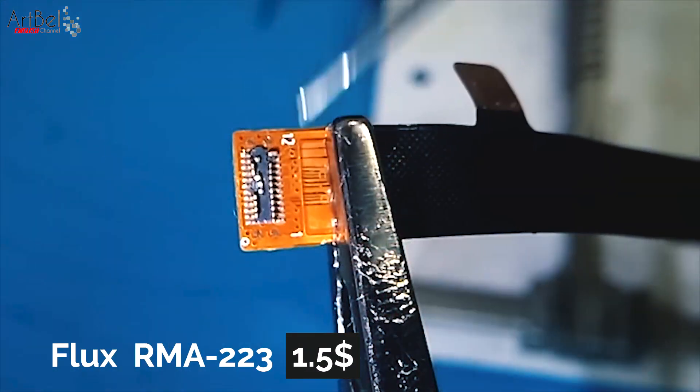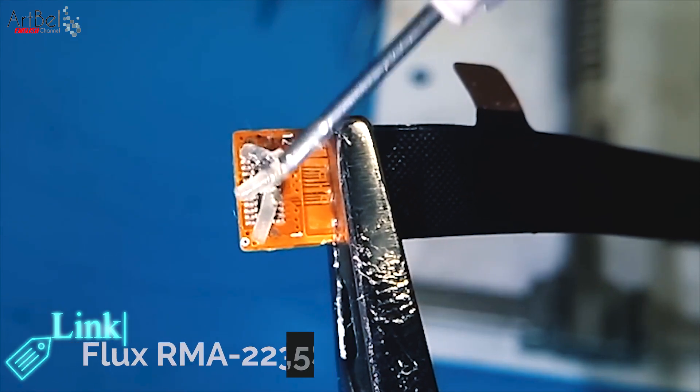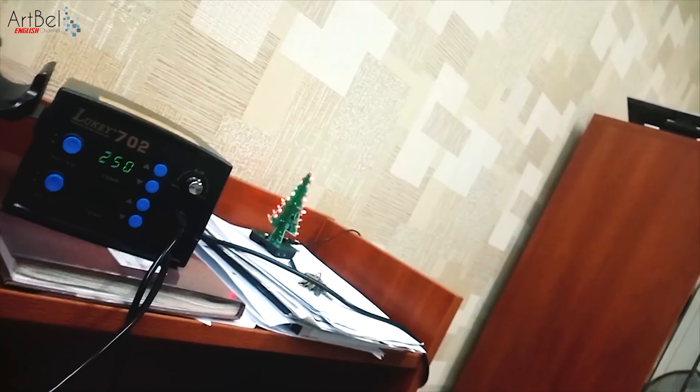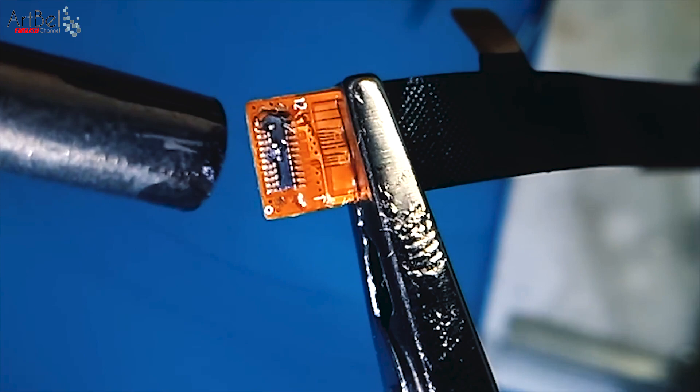First of all, remove the old broken connector from the cable. We put flux to it. Take the hair dryer of the soldering station and set the temperature to above 250 and heat the cable. Heat the connector and remove it.